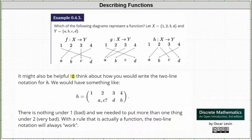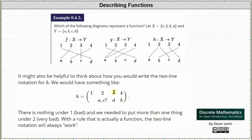Finally, it might be helpful to think about how we would write the two-line notation for h: there is nothing under one because it is not mapped to an element in the codomain, and we would have to put more than one element from the codomain under two — both of these are problematic. With a rule that is actually a function, the two-line notation always works out very nicely, and if it doesn't, it's not a function.